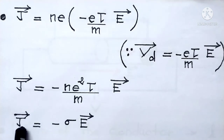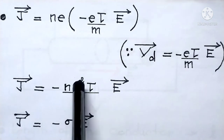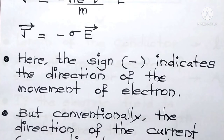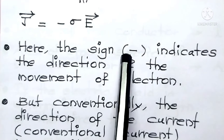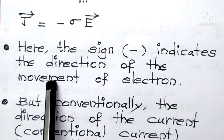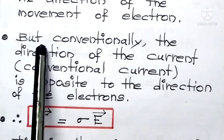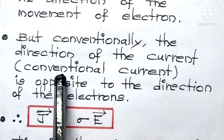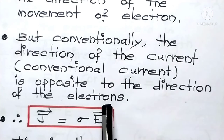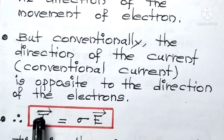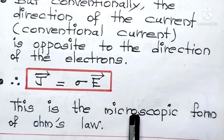In the next step, we define σ (sigma) = n·e²·τ/m, so J⃗ = -σ · E⃗. The minus sign indicates the direction of movement of the electron. Conventionally, the direction of current — conventional current — is opposite to the direction of the electrons. So for conventional current, we change the sign: J⃗ = σ · E⃗. This is the microscopic form of Ohm's law.